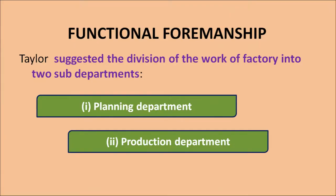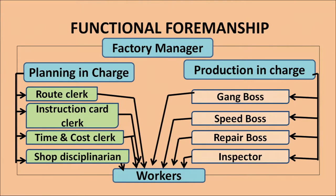Taylor suggested that the work of the factory or the production floor is divided into two departments: a planning department and a production department. Under the planning division, the experts he identified were: route clerk, instruction card clerk, time and cost clerk, and shop disciplinarian. Similarly, under the production department, he identified four major experts: gang boss, speed boss, repair boss, and inspector.